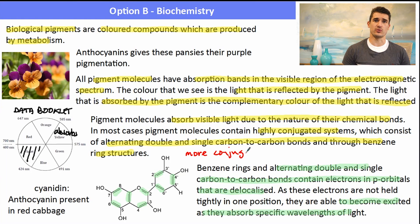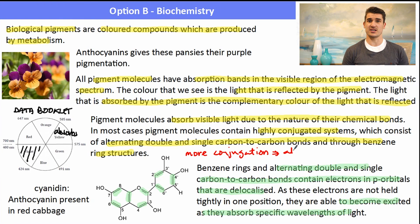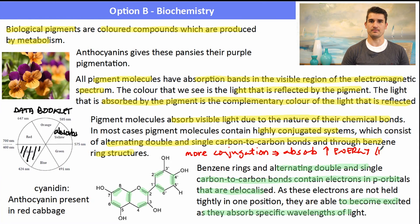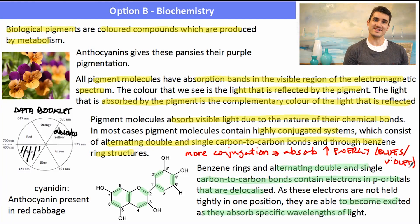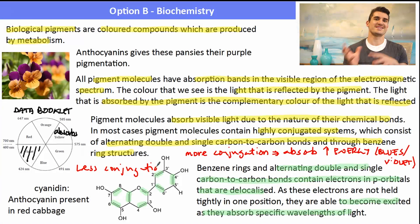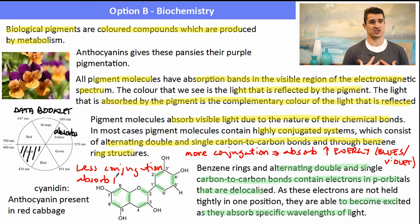The key take-home message is: the more conjugated the system, the more the absorbance tends to be in the higher-energy region of the spectrum — more C=C double bonds means higher energy absorbed. A less conjugated system absorbs lower energy. But remember, what we see is the reflected color, which is the complement of what's absorbed, so you need to apply the color wheel to interpret the visible color.